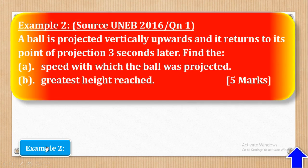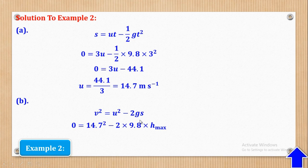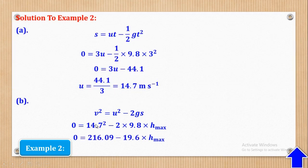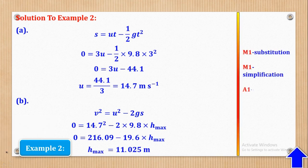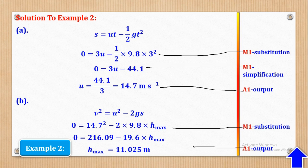Now let's go to part B. We shall use the third equation of motion: V squared equals U squared minus 2GS. When I substitute V equals zero, U is 14.7, G is 9.8, and S is H max, simplifying and making H max the subject, I come up with H max being equal to 11.025 meters. M1 is for substitution, M1 for simplifying, and A1 is for the output. For part B, M1 is for substitution and A1 is for the output. That's how the 5 marks could come about.